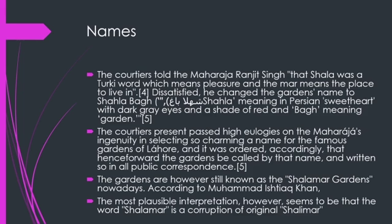First we will talk about names. The courtiers told Maharaja Ranjit Singh that 'Shala' was a Turki word meaning 'player' and 'Mar' means the palace to live in. This satisfied him, and the garden's name was changed to 'Shala Bah' — meaning in Persian 'sweetheart with dark grey eyes and a shade of red,' and 'Bah' means garden. The courtiers praised the Maharaja's ingenuity in selecting so charming a name for the famous gardens of Lahore, and it was ordered that henceforward the gardens be called by that name in all public correspondence. The gardens are however still known as the Shalimar Gardens nowadays.